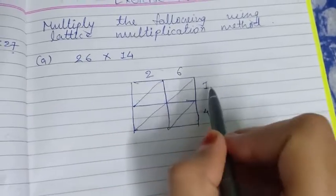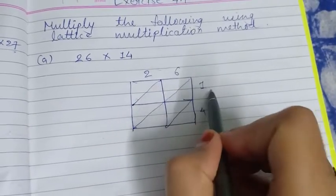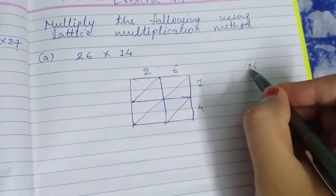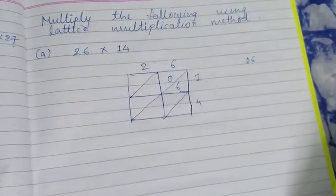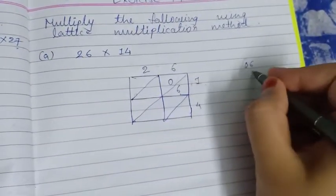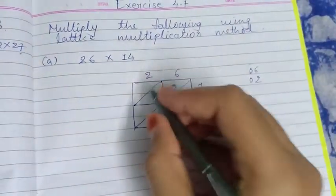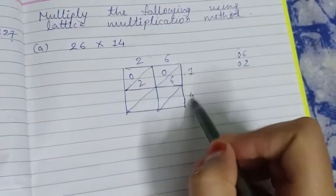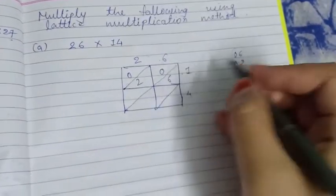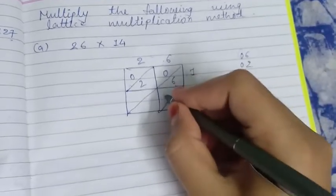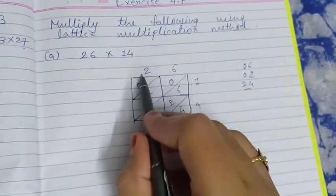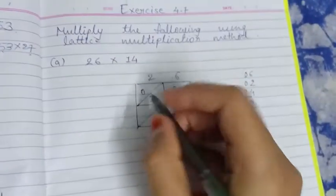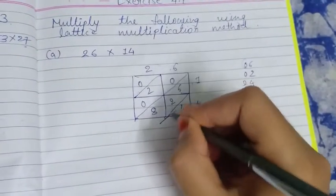Now start the multiplication. 1 × 6 = 6, no tens value so put 0 in the tens place: write 0 and 6. Then 1 × 2 = 2, no tens value so write 0 and 2. Next, 4 × 6 = 24, two digits so write 2 and 4. Then 4 × 2 = 8, only one digit so write 0 and 8.